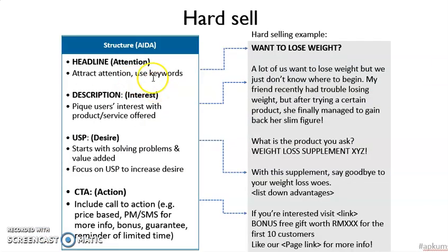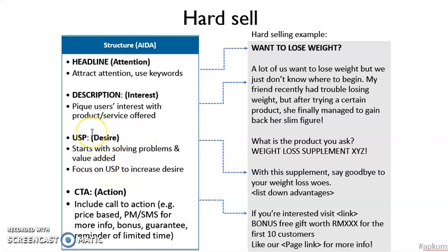How about hard selling? Hard selling has a simple structure called AIDN — standing for Attention, Interest, Desire, and Now (action). First, you have a very good title or headline to attract the attention of people. Then the description must create interest for people to read it. Next, give information on the value of the product to create the desire of customers to buy. And last, CTA — call to action — ask them to do some action, for example: call us, PM for information, buy before the time deal, like our page for more information, or share our page for discounts. So this is more towards selling already.